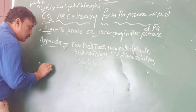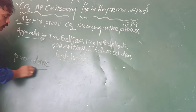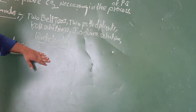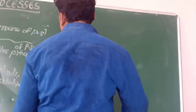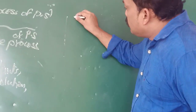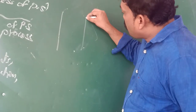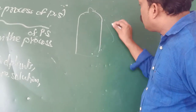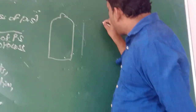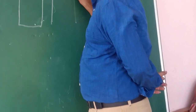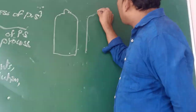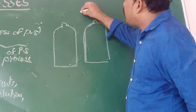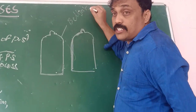Next is the procedure — how to do this experiment. First of all, you have to take two bell jars. I will draw a diagram here. This is one bell jar, which is a transparent one, shaped like a bell.